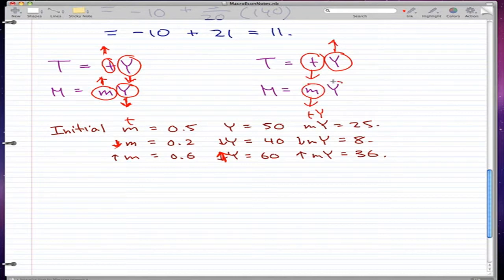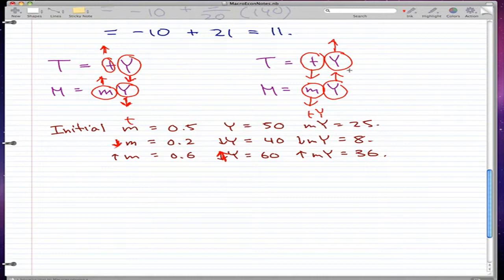If on a test I gave you these initial parameters - that t just simply rose and y just simply fell, but I gave you no numbers - what are you gonna answer me with?